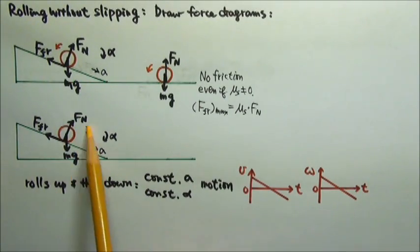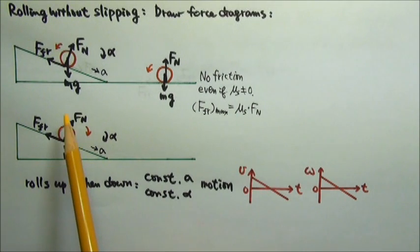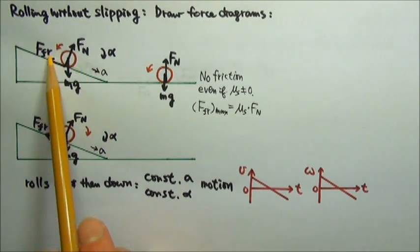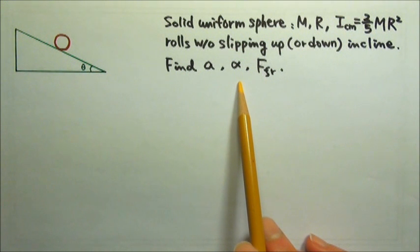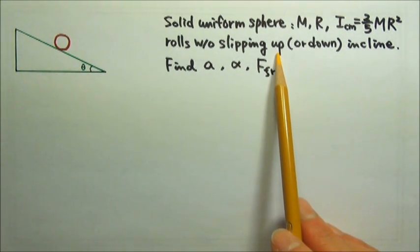By the way, since all the forces on the sphere are the same whether the sphere is rolling without slipping up or down the incline, all these will be exactly the same if I change the scenario to down the incline instead of up.